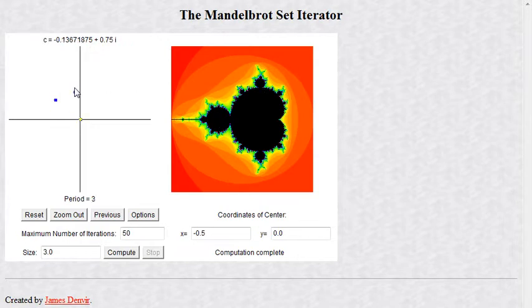Now if I click up here somewhere, now I'm oscillating between three different values. Over here, now I'm oscillating between four different values. And so, all these different values of C are giving me different behaviors. But all these points are shaded in black here. The points that are shaded in black are points in the Mandelbrot set.